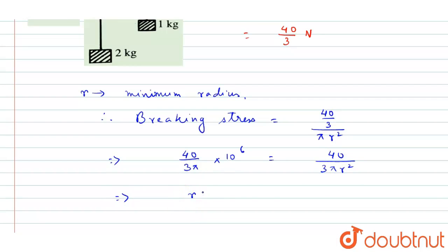r easily. r square equals 1 by 10 to the power of 6. That will be r equals 1 by 10 cube meter.